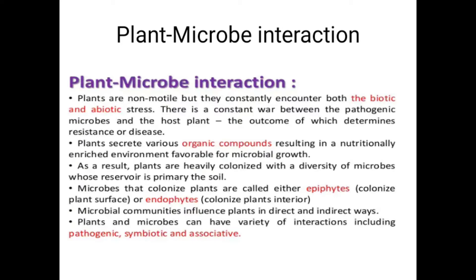Microbial communities influence plants in direct and indirect ways. پلانٹس اور microbes کے درمیان variety of interactions ہیں جن میں pathogenic، symbiotic، اور associative شامل ہیں۔ پلانٹ microbe کے ساتھ تین طرح کا relation بناتا ہے: pathogenic جس میں بیماری ہو، symbiotic جس میں دونوں ایک دوسرے کی مدد کریں، اور associative۔